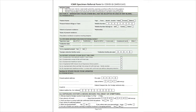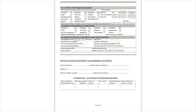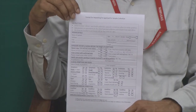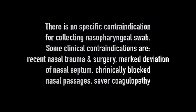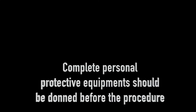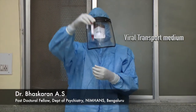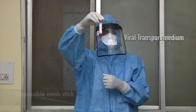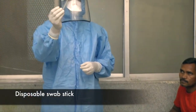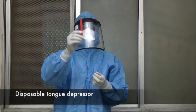The swabs taken from the nasopharyngeal and oropharyngeal sites should be put into viral transport medium and then sent to the neurovirology lab. This is the viral transport medium. This is the swab stick. This is the disposable tongue depressor.